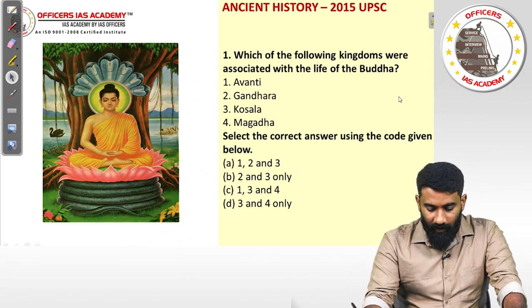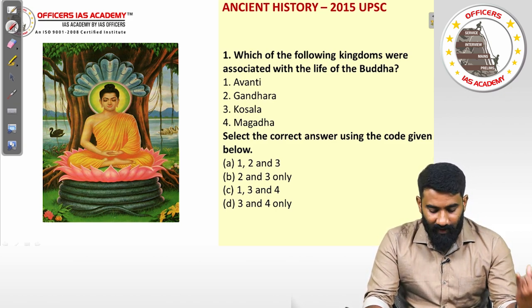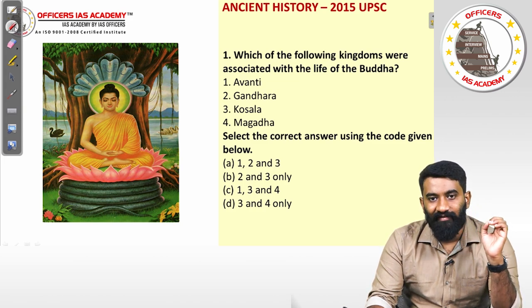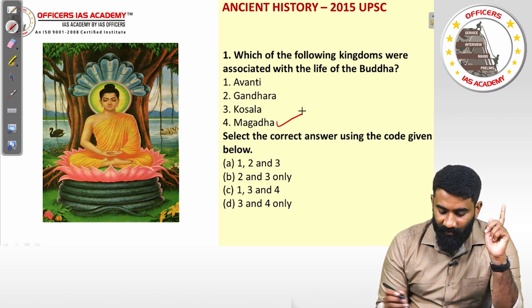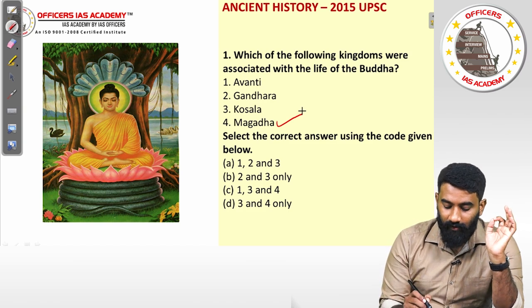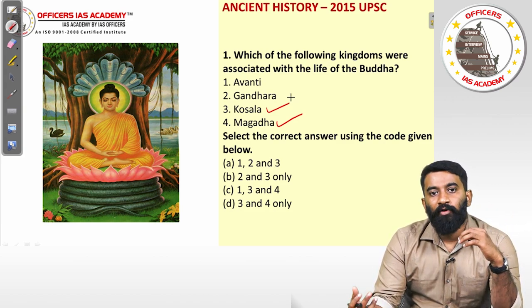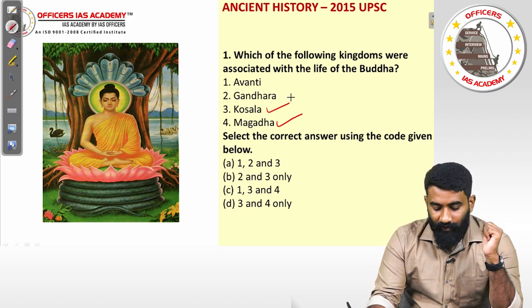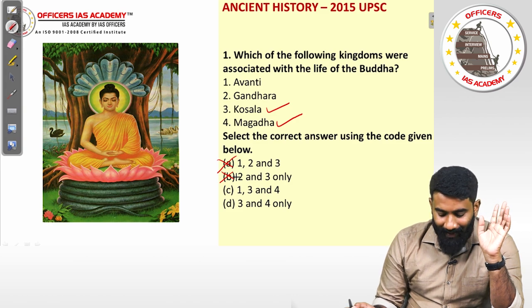The first question: which of the following kingdoms were associated with the life of the Buddha — Avanti, Gandhara, Koshala, Magadha? We know for a fact that Buddha's life is associated with Magadha, as it is in and around Magadha that Buddha travelled the most. It is also associated with Koshala, as there are many evidences of Buddha having been present there and the king of Koshala himself patronized Buddha. So three and four must be in the answer, meaning options A and B are eliminated — it could be either C or D.